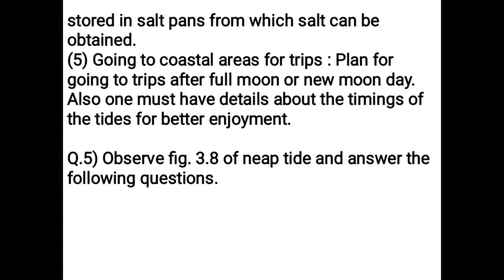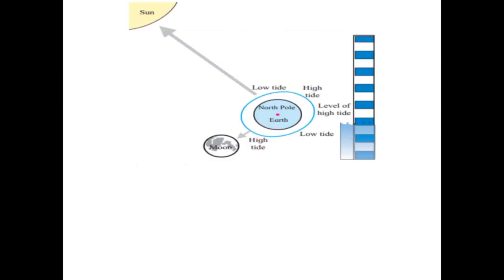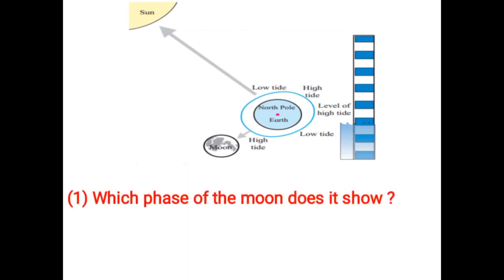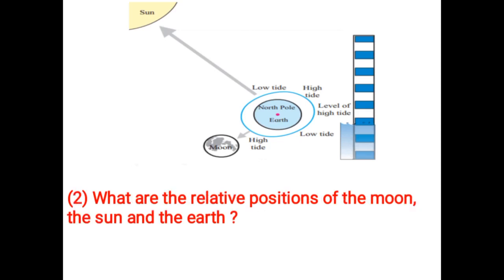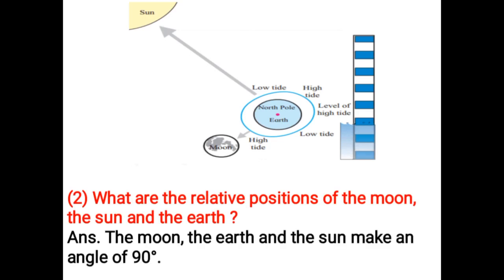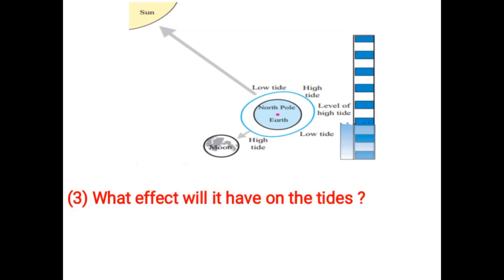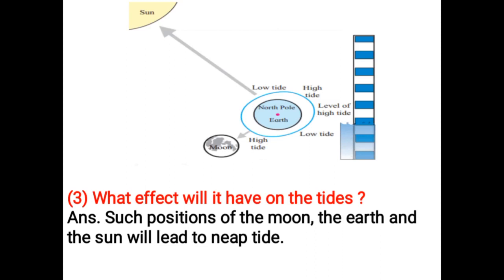Observe figure 3.8 of Neap Tide and answer the following questions. Which phase of the moon does it show? The diagram shows the phase of the quarter moon. What are the relative positions of the moon, the sun, and the earth? The moon, the earth, and the sun make an angle of 90 degrees. What impact will it have on the tides? Such positions of the moon, the earth, and the sun will lead to Neap Tide.